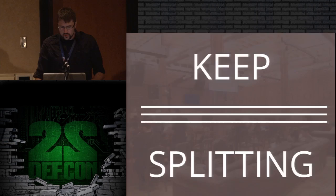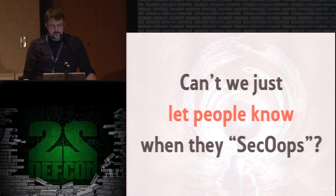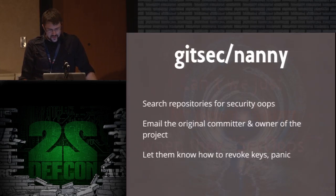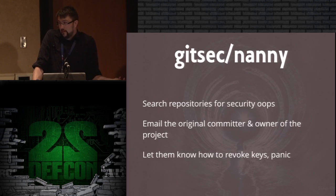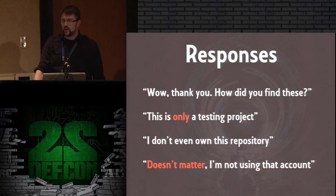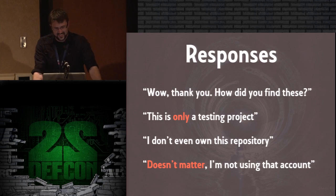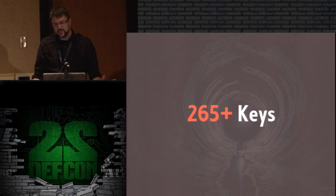So couldn't we just let people know when they mess up? Their emails are attached in GitHub. We created a project called GitSecNanny — it searches repositories for the same security mistakes, emails the original committer and the owner, and lets them know how to revoke keys and how to panic. The responses were varied: some people said thank you, some said it's only a testing project. So far I found about 265 keys, and there are certainly more out there.